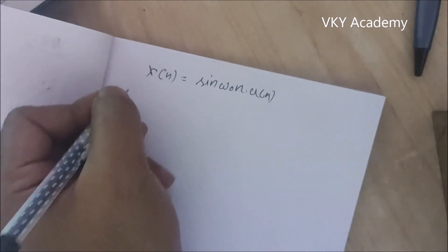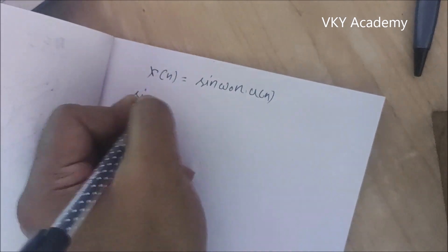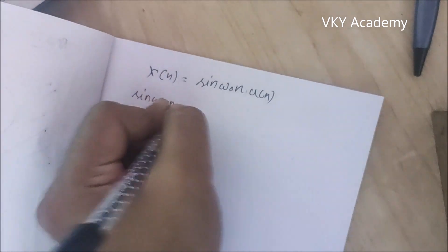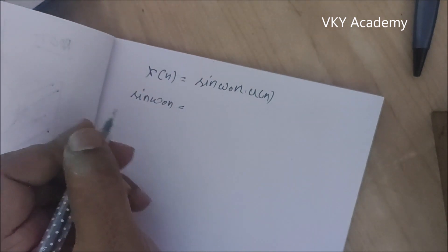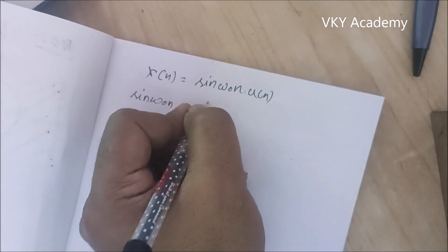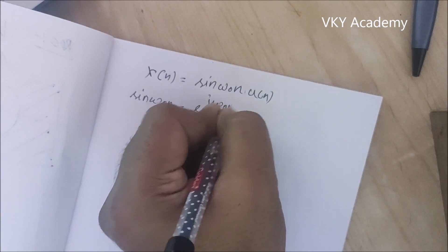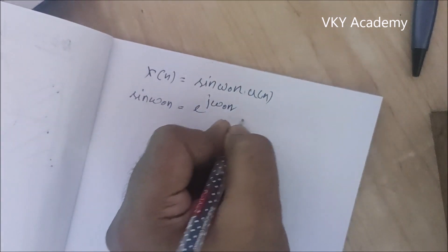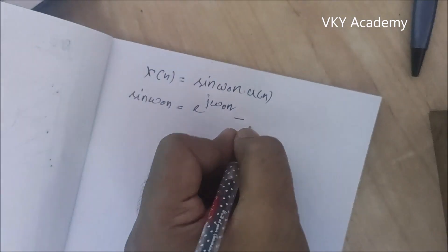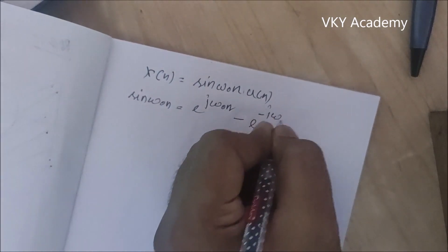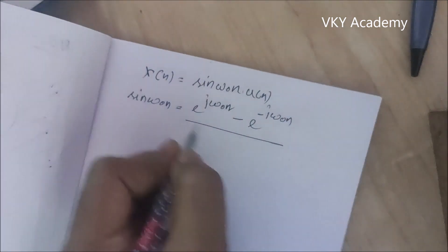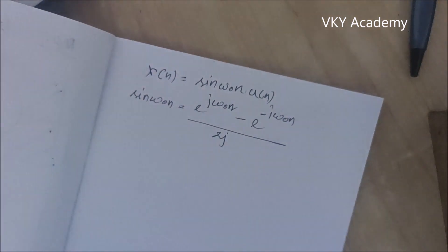As we know, sin(ω₀n) can be represented in exponential form as: e^(jω₀n) minus e^(−jω₀n), divided by 2j.